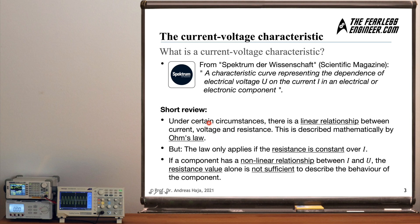First, under certain circumstances there exists a linear relationship between current, voltage, and resistance, described mathematically by the famous Ohm's law. However, Ohm's law only applies if the resistance is constant over the current. If you look at the current voltage characteristic of such a component, you will find it resembles a straight line with a constant slope — constant over all values of the current — and this constant slope represents the resistance of the component.